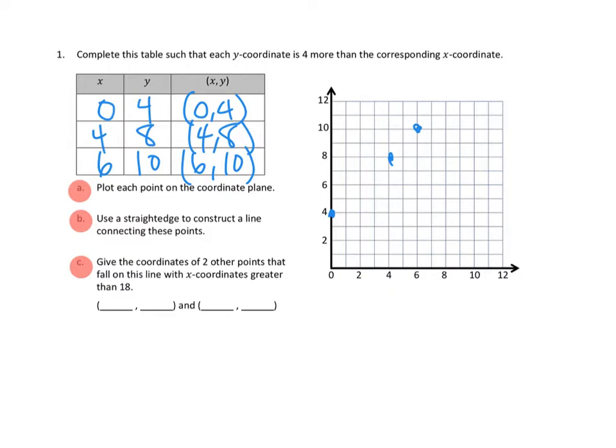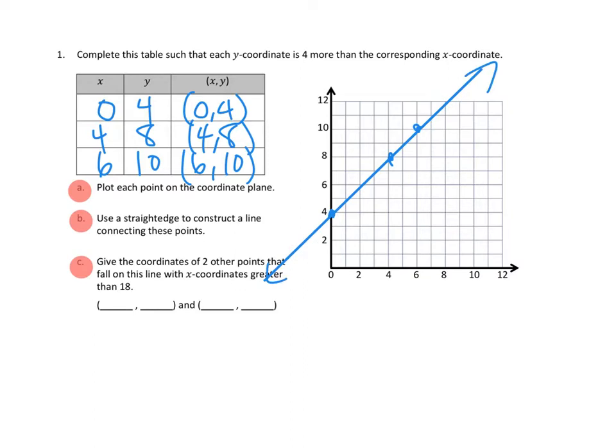So we've done part A. Part B says use a straight edge to construct a line connecting these points. That should be pretty easy, right? We need to get out my handy line tool. I'm going to draw a line like that and make sure that it goes through all three of those points. Perfect. There's my line. I'm going to give it arrows. Awesome, I like my line.